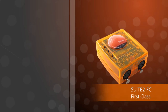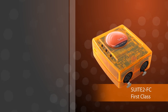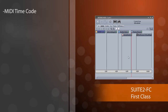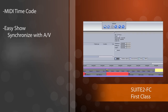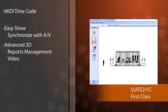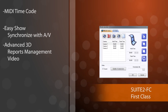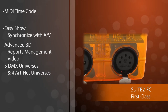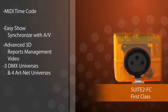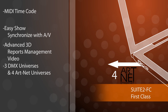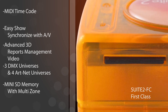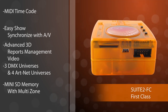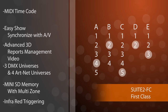The Suite 2 First Class allows access to the first class software features. These include MIDI timecode triggering, access to EasyShow allowing audio-visual synchronization, and access to advanced 3D features such as reports management and video recording. The interface supports three DMX universes, each of which can be used as an input or an output. You can output up to four ARTNET universes from your computer's Ethernet socket. The interface also contains powerful stand-alone features such as mini-SD memory, multi-zone allowing several scenes to be played at once, and infrared triggering.